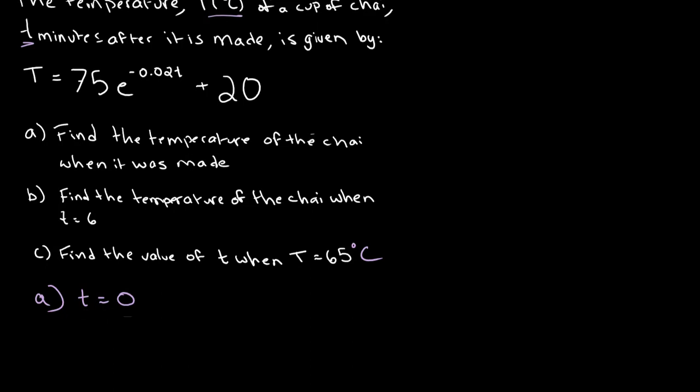we simply plug zero into the position of T. So, big T is equal to 75 times e to the power of negative 0.02 times zero plus 20. This gives us e to the power of zero, which is equal to 1, which gives us 75 plus 20, which gives us an answer of 95 degrees centigrade.